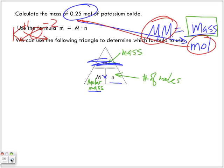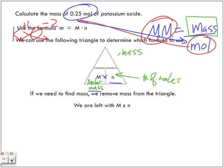Multiply, okay. So if we need to find a mass, remove the mass from the triangle. So I just removed it. Okay, and we're multiplying the molar mass with the number of moles. And again, we need to find the molar mass.